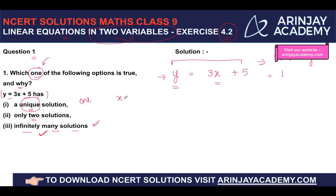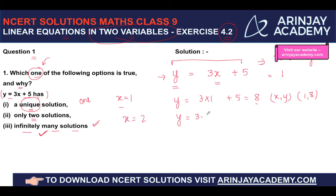For example, if x is equal to 1, then y will be equal to 3 into 1 plus 5, which is 8. So one solution is (x, y) = (1, 8). Similarly, if x is equal to 2, then y equals 3 times 2 plus 5, giving 6 plus 5 equals 11. So another solution is (2, 11).